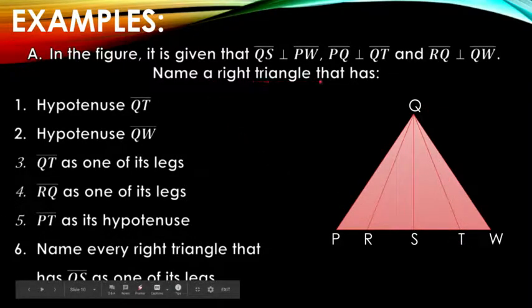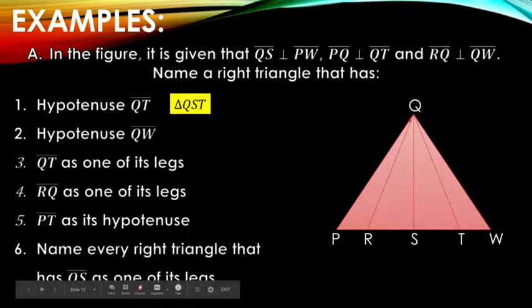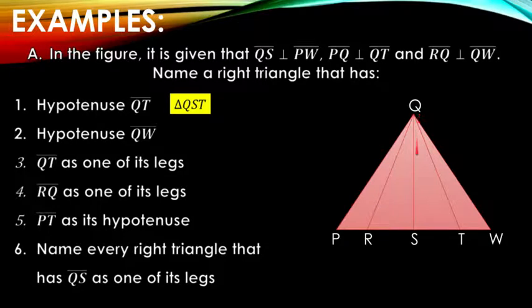Name the right triangles that has hypotenuse QT. Let's see. The right triangle with hypotenuse QT, this is our hypotenuse QT. We have triangle QST.